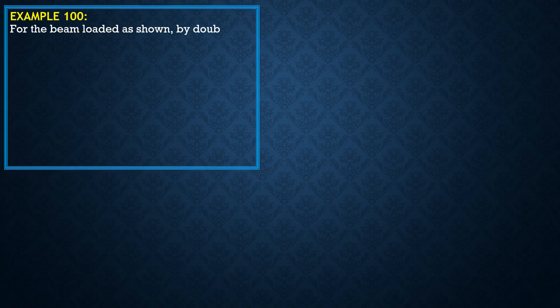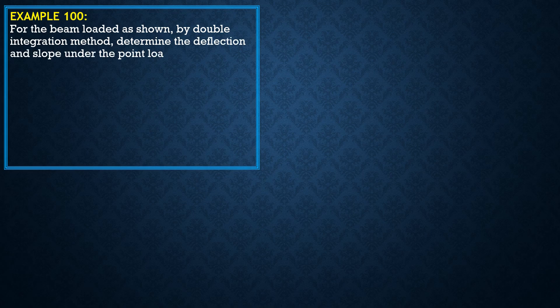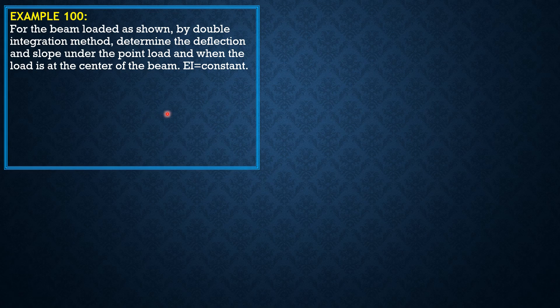For the beam loaded as shown, determine the deflection and slope under the point load and when the load is at the center of the beam using the double integration method. EI is constant.